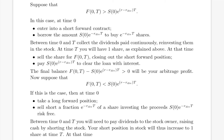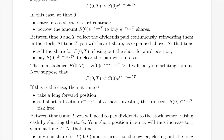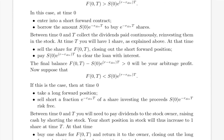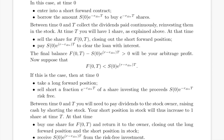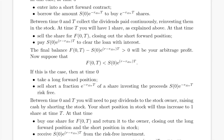At time T, sell the share for F(0,T), closing out the short forward position. Pay S0 · e^((r − r_div) · T) to repay the loan with interest. The final balance F(0,T) − S0 · e^((r − r_div) · T) > 0 will be the arbitrage profit.